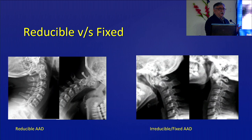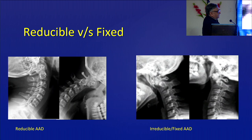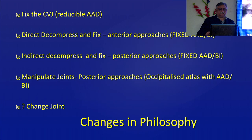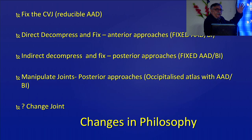Another term used very often is reducible versus fixed. If on extension everything comes back in place — like when a patient flexes his neck, the odontoid process falls forward, the C1 falls forward, but on extension it comes back — that is reducible. Sometimes people use the word mobile or immobile, sometimes reducible or irreducible.